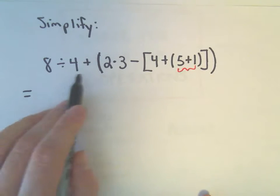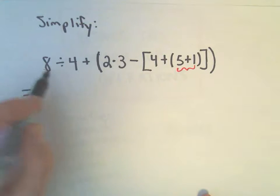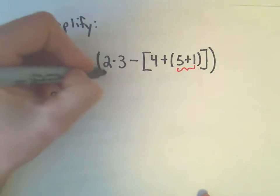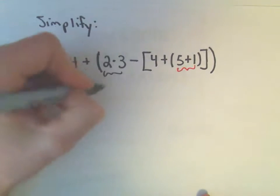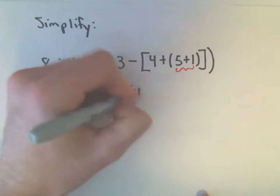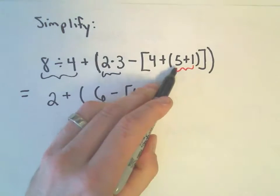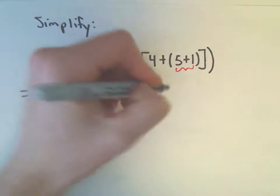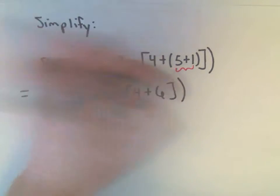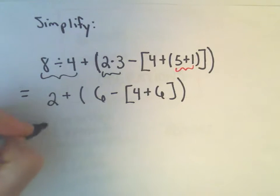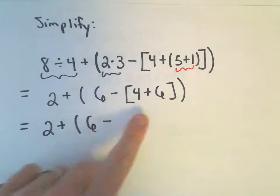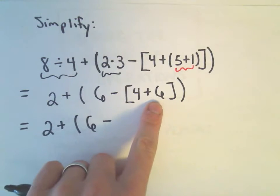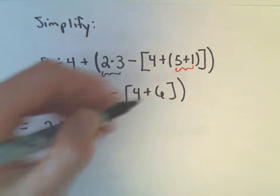We could actually do our division out front as well. I think I'll do that as well. So 8 divided by 4, that's just going to give us 2. 2 times 3, we could actually go ahead and simplify that as well. So that's 6. And now back inside of our brackets and parentheses, 5 plus 1 is going to give us 6. So now I'm just going to keep doing everything inside the brackets and parentheses. So let's see, inside the brackets, now we've got 4 plus 6, which is going to be 10.